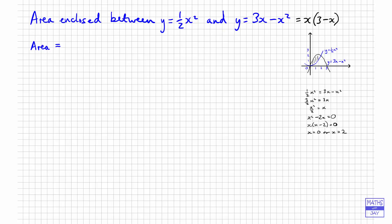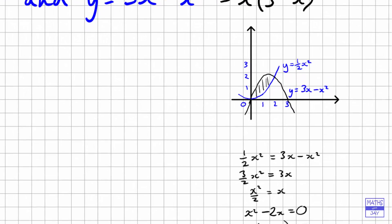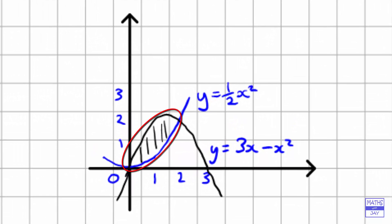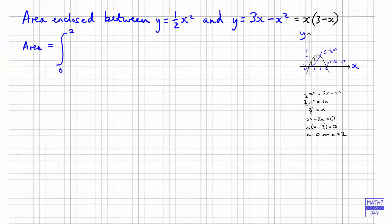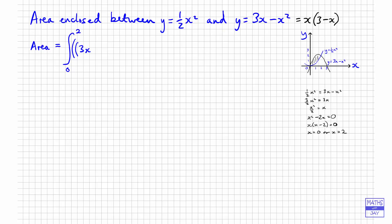We've done the hard work now. To write down the area, it's going to be an integral with limits from 0 to 2, since the area goes from x equals 0 up to x equals 2. When finding the area between two curves, we take the area under the upper curve, 3x minus x-squared, and subtract the area under the lower curve, half x-squared. So the integrand is (3x minus x-squared) minus half x-squared.